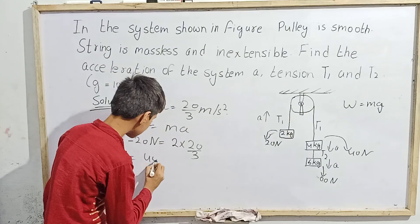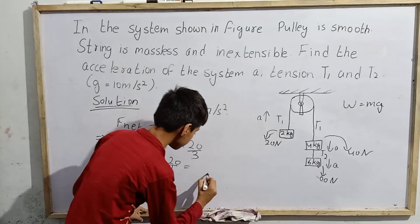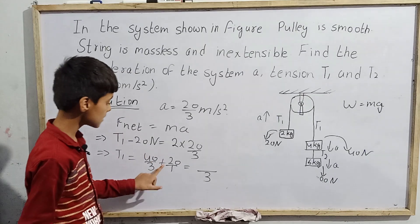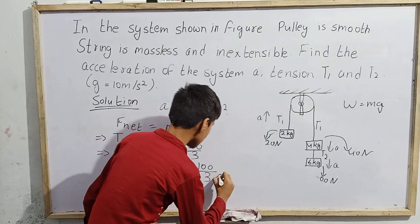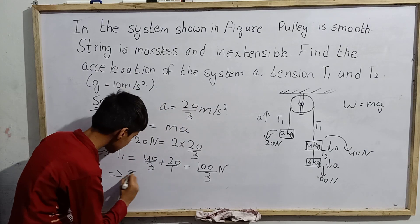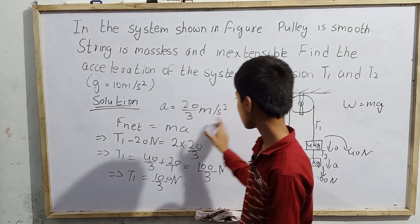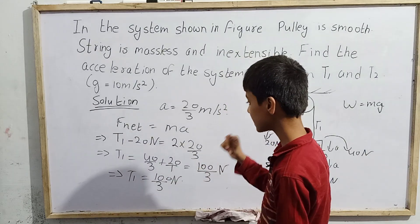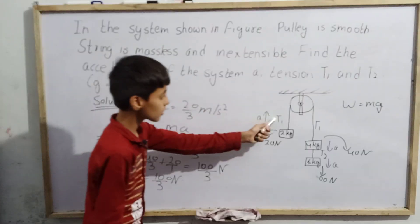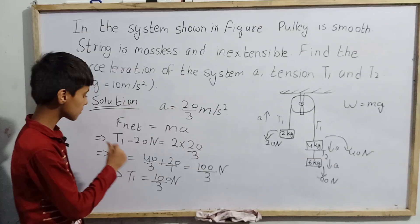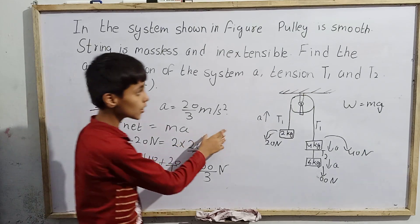Solving: T1 = 40/3 + 20/1. Taking LCM of 3: T1 = (40 + 60)/3 = 100/3 newtons. So the first tension T1 = 100/3 newtons, found by applying net force equals mass into acceleration to this block.